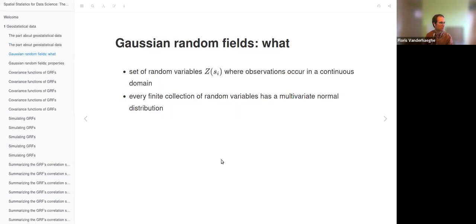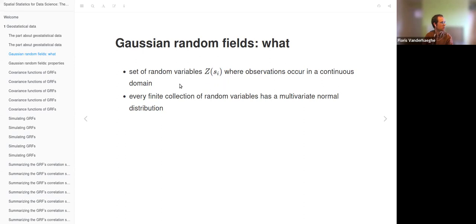For Chapter 12, we discuss Gaussian random fields. These are geostatistical data — a set of random variables Z for each location s_i where observations occur in a continuous domain. An extra condition in Gaussian random fields is that every finite collection of random variables, meaning a specific subset of locations, has a multivariate normal distribution.